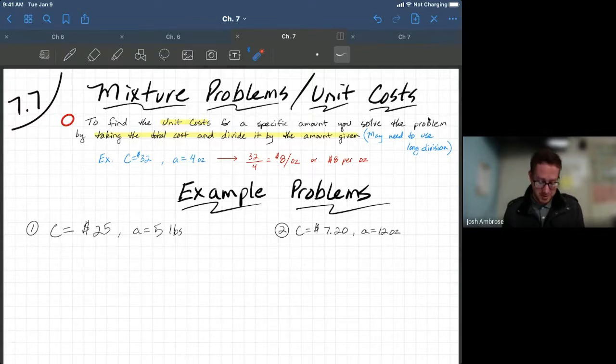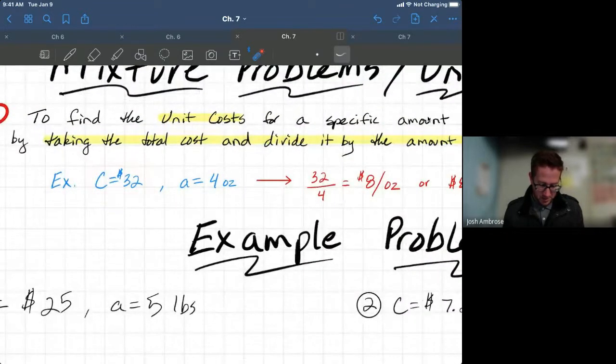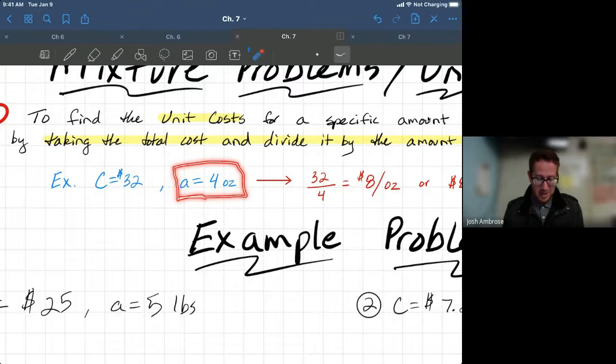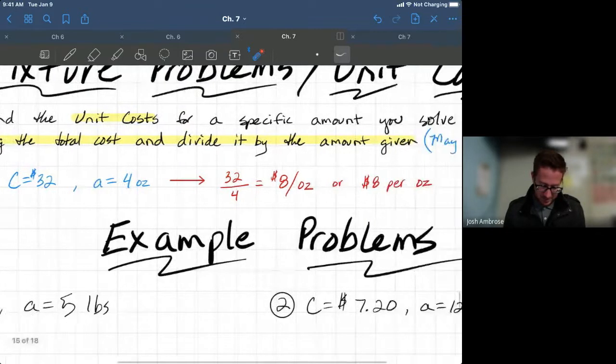So, there's an example that we worked out. If you're given a total cost of $32, let's go ahead and zoom in. A total cost of $32 and $32 gets you an amount of four ounces. Whatever this is that you would be purchasing must be extremely popular and it's very expensive because you're only getting four ounces and it costs $32. So, how do you calculate that?